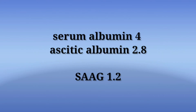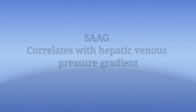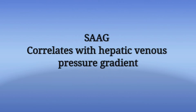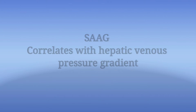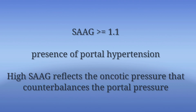So consider a patient whose serum albumin is 4 and his ascitic fluid albumin is 2.8 — his SAAG is 1.2, which is more than 1.1. Generally, SAAG correlates with the hepatic venous pressure gradient. If SAAG is more than or equal to 1.1, it indicates the presence of portal hypertension. High SAAG reflects the oncotic pressure that counterbalances the portal pressure, according to Starling's law.